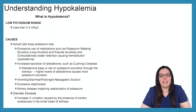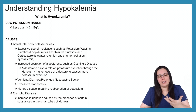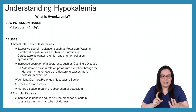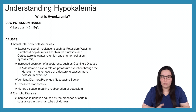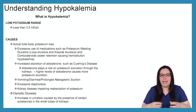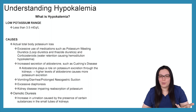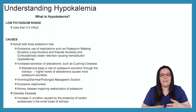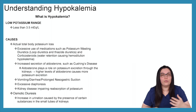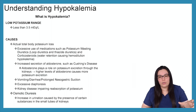When we're looking at low potassium ranges — less than 3.5 milliequivalents per liter — the causes include actual total body potassium losses. Excessive use of medications such as potassium-wasting diuretics: loop diuretics like Lasix, thiazide diuretics, and corticosteroid use. Water retention causes hemodilution leading to hypokalemia. Increased secretion of aldosterone, such as in Cushing's disease patients, causes more potassium excretion through the kidneys, leading to hypokalemia.